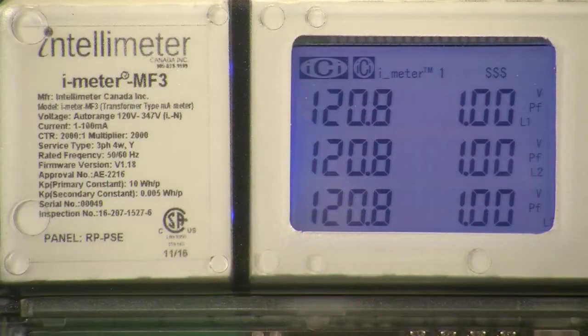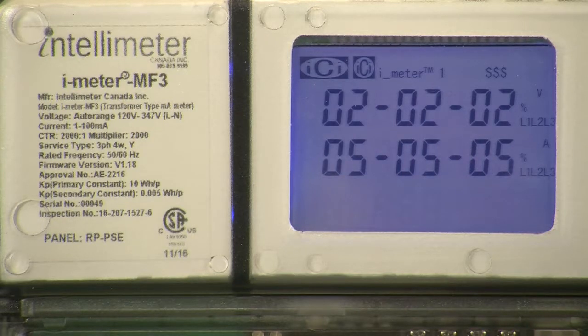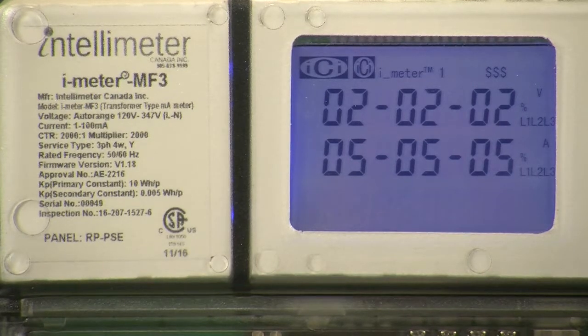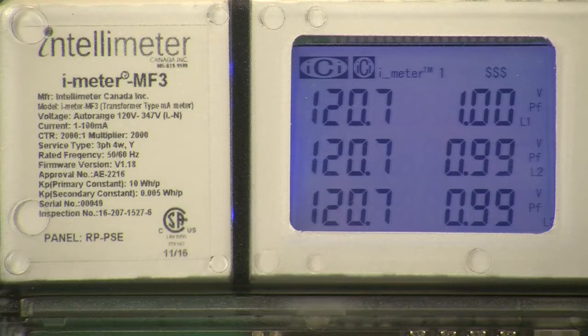As you can see, the iMeter MF3 is now powered up and we have load information showing on the display. The display cycles through many different aspects of information, but from a troubleshooting standpoint, we are mainly concerned with the amperage and power factor. However, in order to perform this troubleshooting, you must first put load on the circuit, breaker, or feeds that you are metering. Any load above 1 amp per phase should suffice.